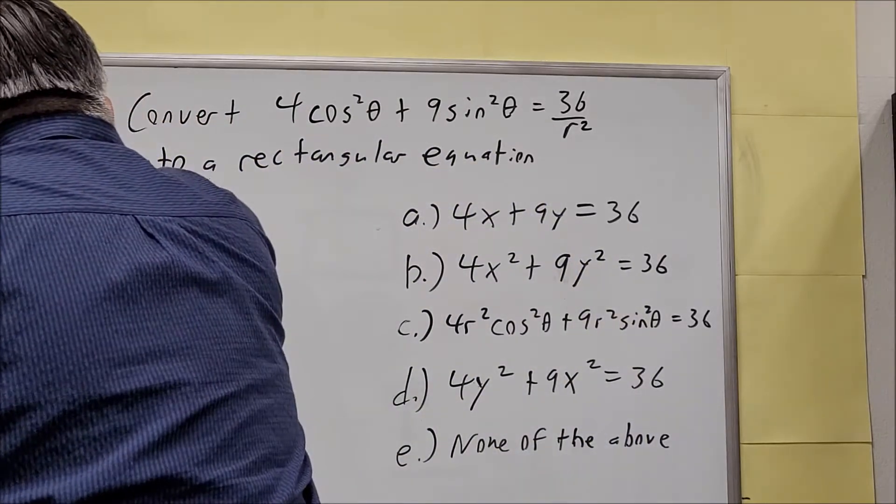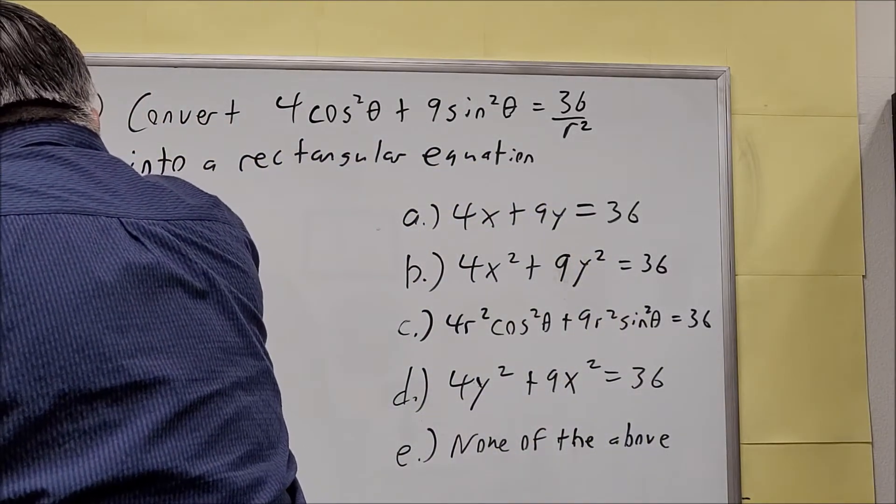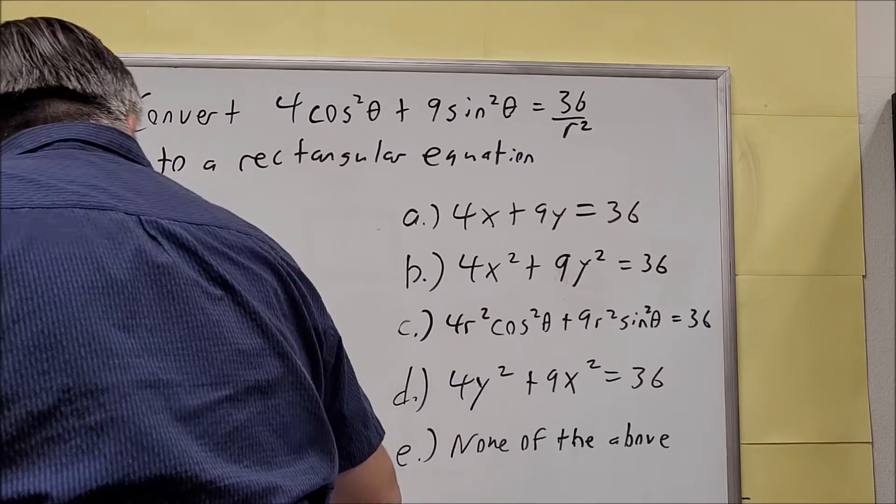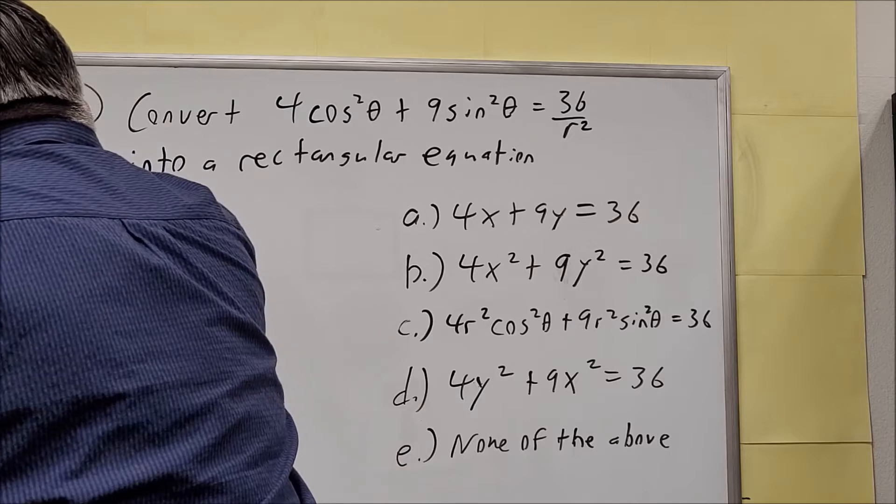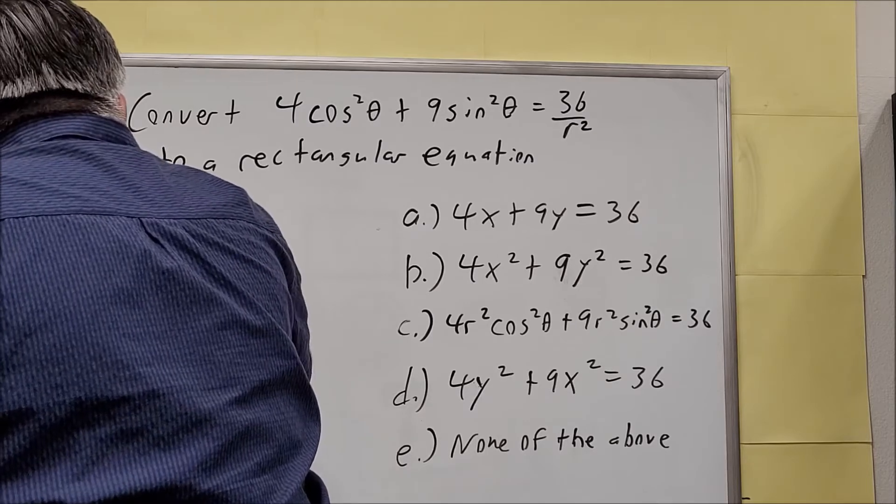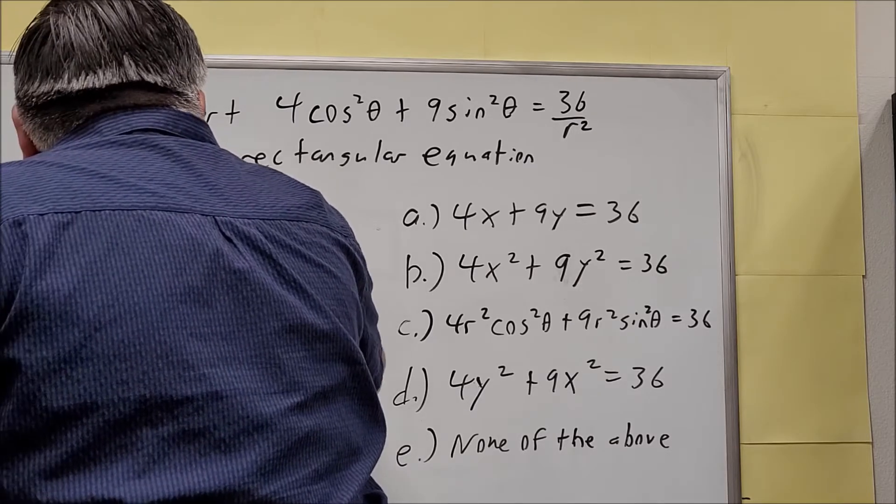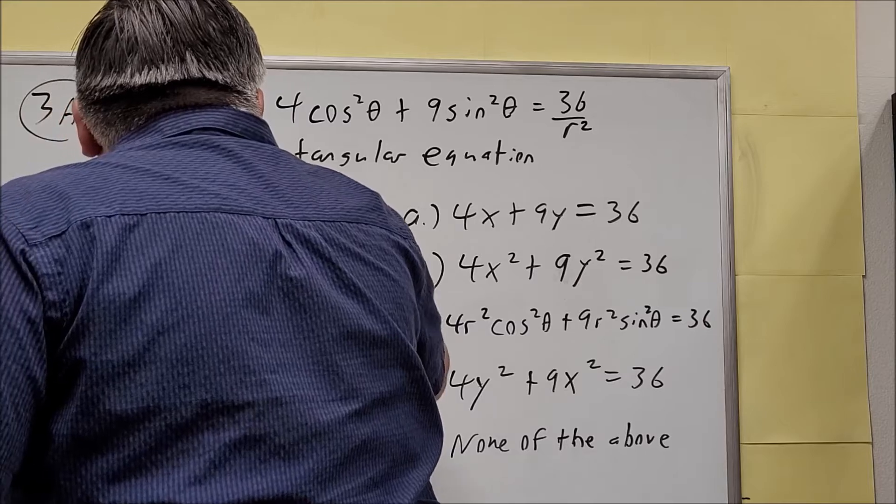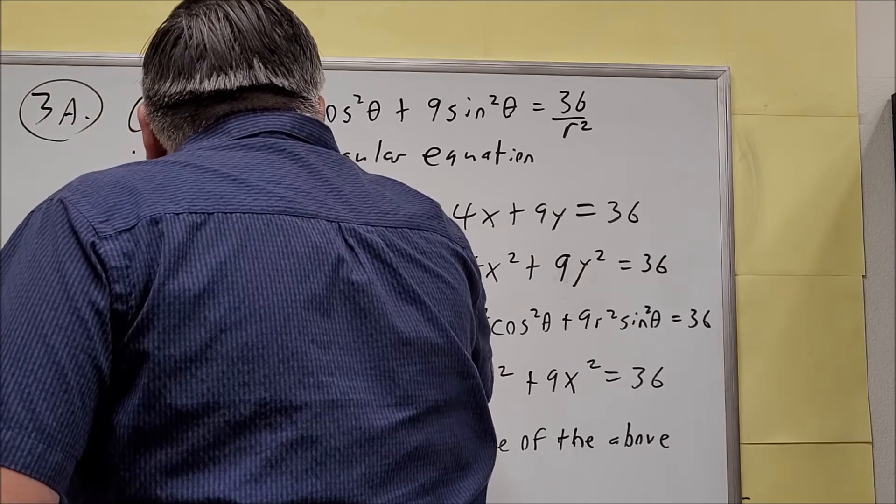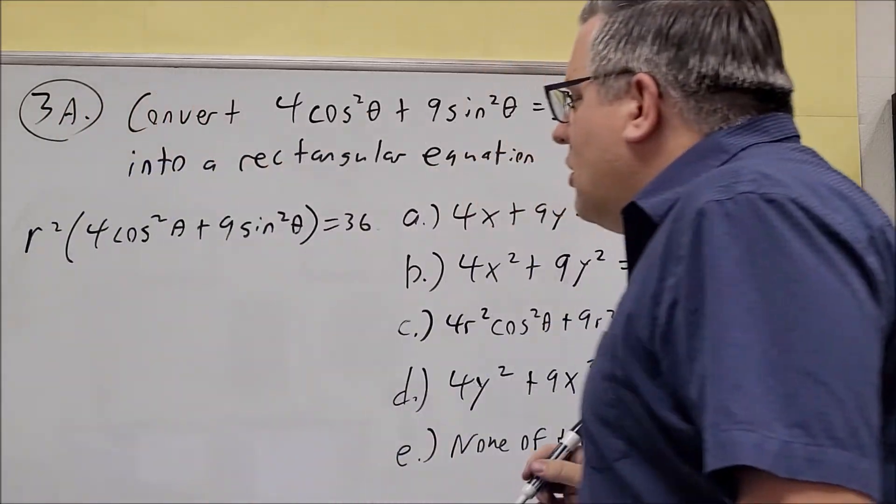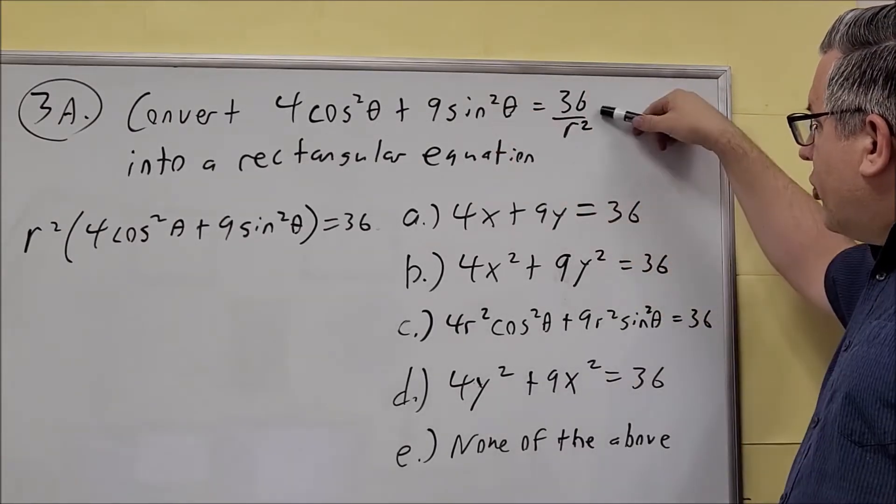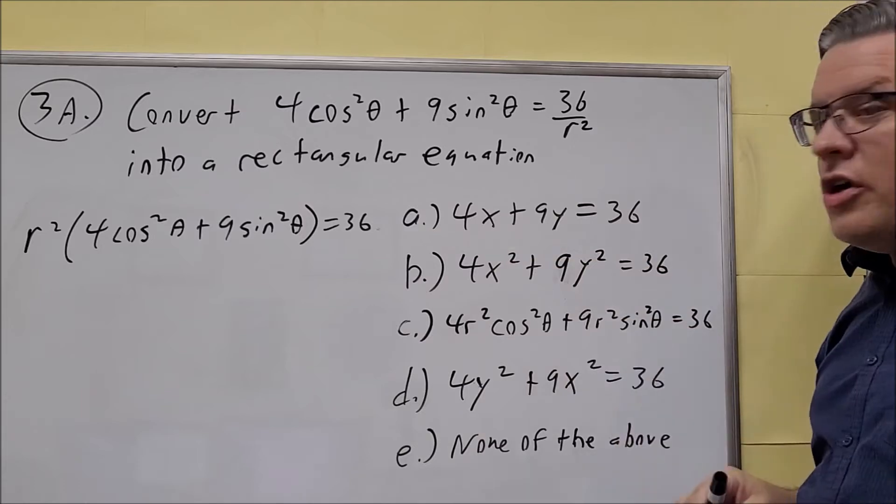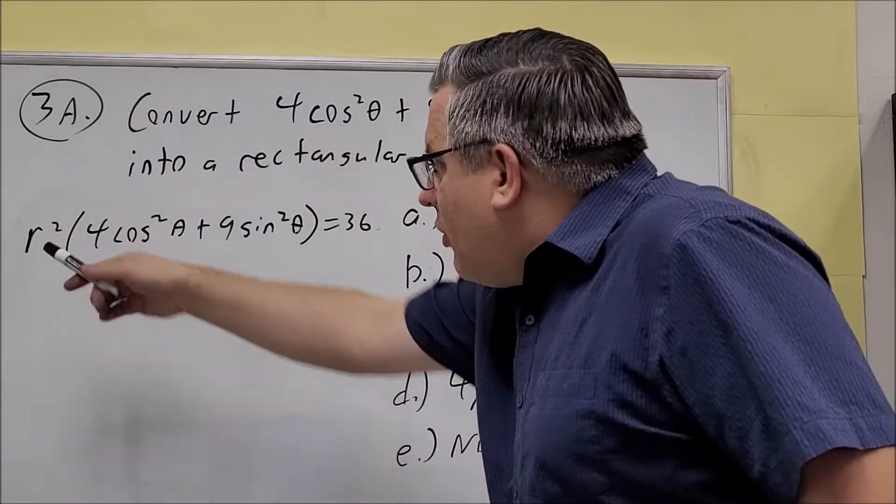So we're going to get four, we're going to have r squared outside. So r squared times all this, four cosine squared theta plus nine sine squared theta equals 36. So that's your first step right there is to multiply both sides. We've cleared out the r squared from this side. That's why you get 36. Then you have r squared here.